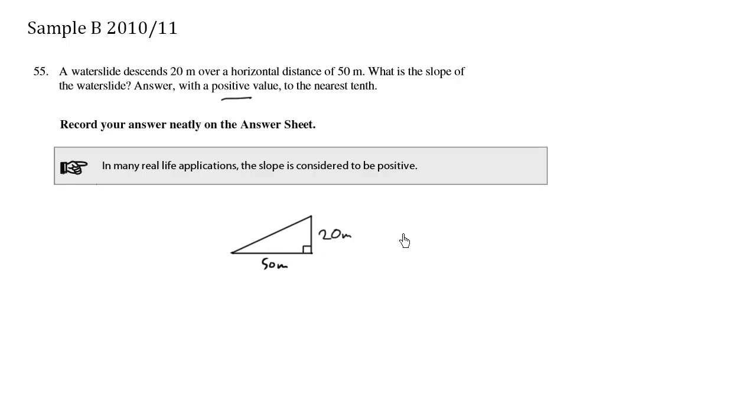Now we know that slope is equal to the rise over run. So the rise here is 20 and the run here is 50. So the slope is approximately two-fifths, which is equal to 0.4.